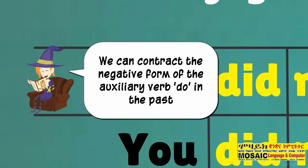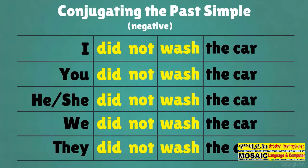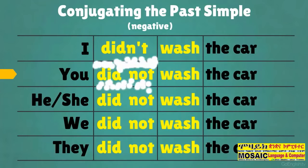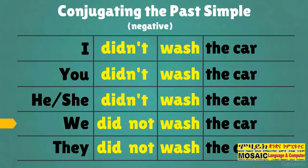We can contract the negative form of the auxiliary verb do in the past: I did not → I didn't, you did not → you didn't, he did not → he didn't, she didn't, we did not → we didn't.